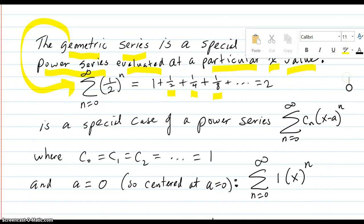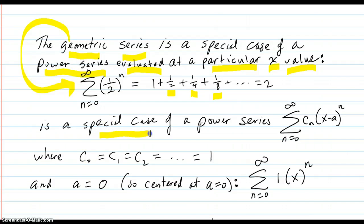That series is a special case of a general power series. This is a general power series where all the c_n's are all equal to 1, and the a equals zero.